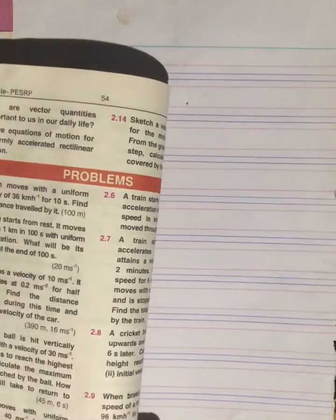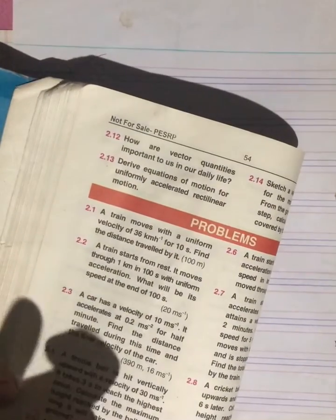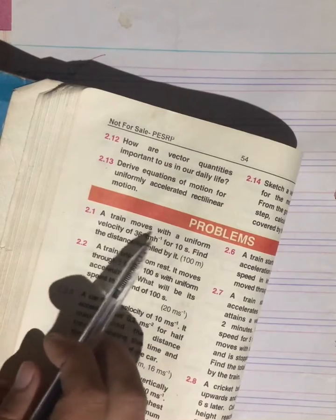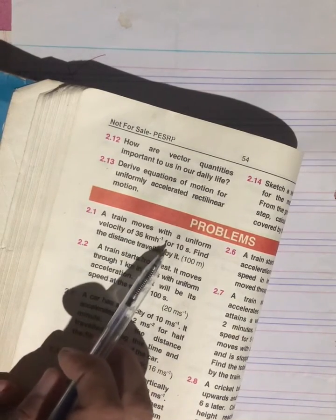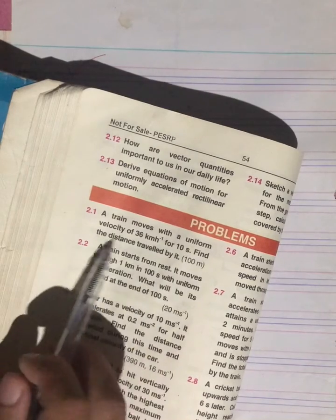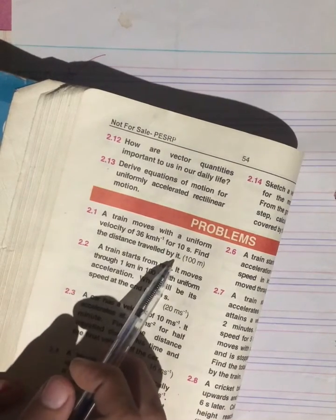Now we have a problem: a train moves with a uniform velocity of 36 km per hour for 10 seconds. Find the distance traveled by it.